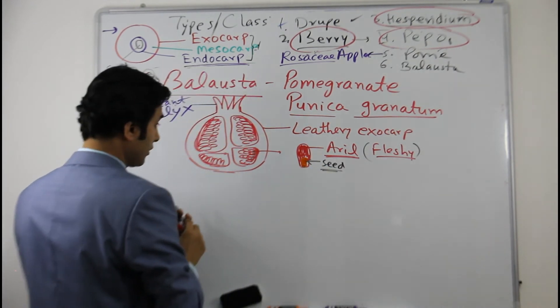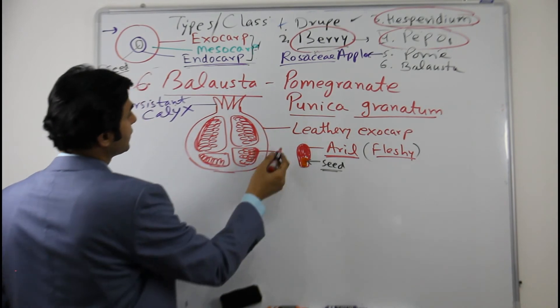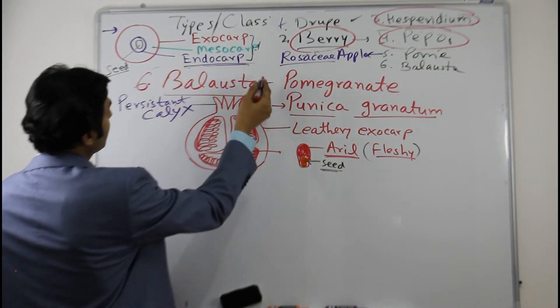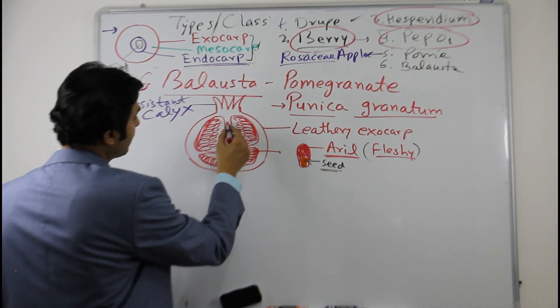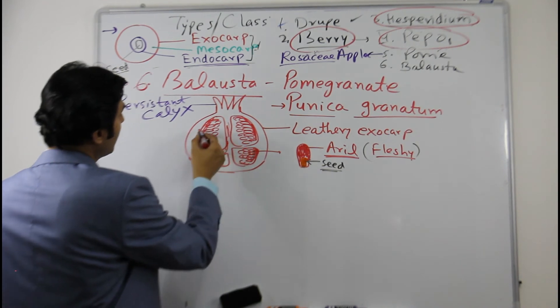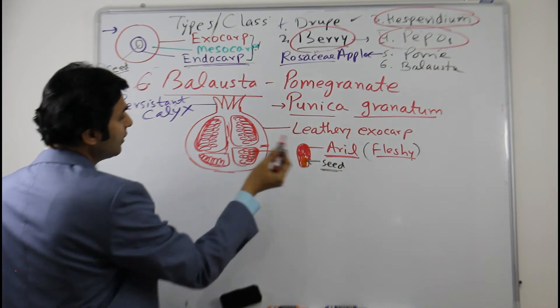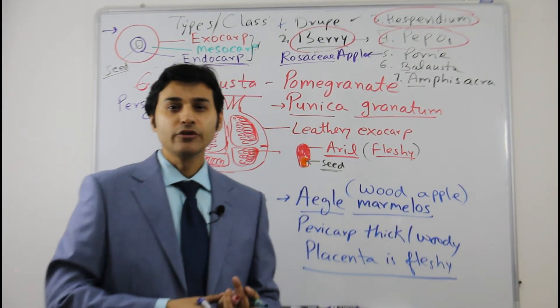So this is pomegranate, and the scientific name is Punica granatum. The fruit type is balusta - leathery exocarp, and then there are papery divisions also here. And mesocarp is this, and then this is the seed.